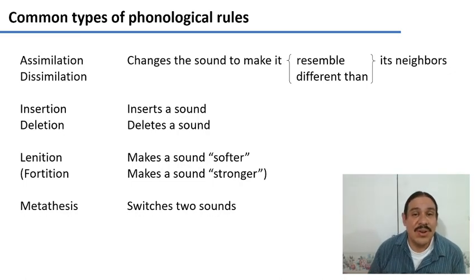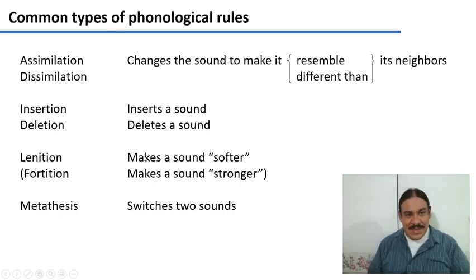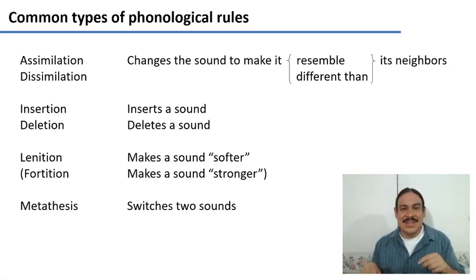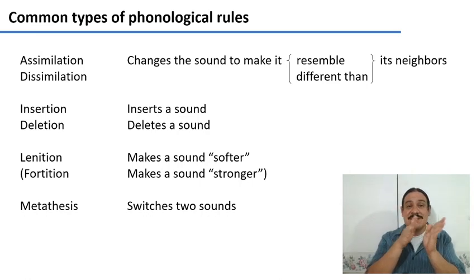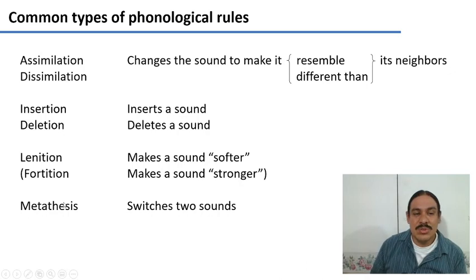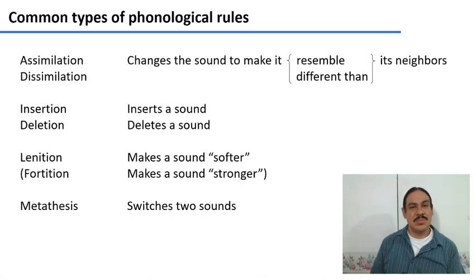There's many others that are fairly common. For example, in dissimilation you make two sounds more different. You make a sound more different than its neighbors. We have insertion and deletion, where you insert or delete a sound. We have lenition and fortition, where you make a sound softer or stronger. Softer generally means more airflow, for example, going from a stop to a fricative. We also have metathesis, which is a process where two sounds switch places. I'm going to show you a few examples of these types of phonological rules.